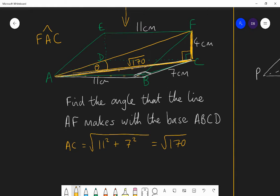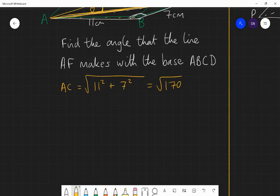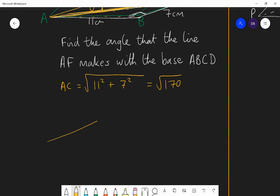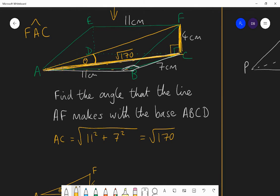So now I know that length is root 170. So I'm now interested in trying to find theta. I know the adjacent side of this triangle, and I know the opposite side of this triangle, AFC. I could redraw that triangle AFC just to make it simple. So I'm just focusing on what I want to focus. There's theta. That's 4 centimetres, and that's root 170. So that's the triangle ACF.